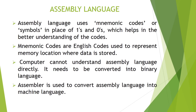The second low level language is assembly language. Assembly language uses mnemonic codes or symbols in place of 1s and 0s. After machine language, assembly language came, using mnemonic codes which were similar to some English words, helping in better understanding of the code. Mnemonic codes are English-like codes used to represent memory locations where data is stored. The computer cannot understand assembly language directly — it needs to be converted into binary language. The translator program called an assembler is used to convert assembly language into machine language.